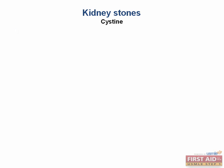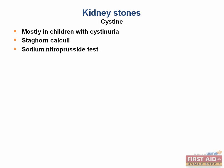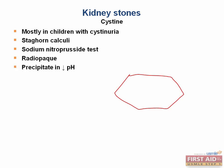Finally, there are cystine stones, which are pretty rare but can occur in the context of genetic cystinuria, most often seen in children. These can also form staghorn calculi. The sodium nitroprusside test will be positive for urine containing cystine. On microscopy, these stones appear hexagonal in shape. They are radio-opaque and precipitate in a decreased pH, so we treat by alkalinizing the urine.